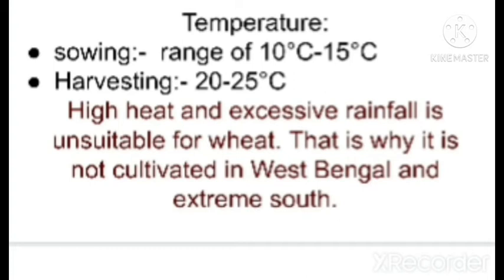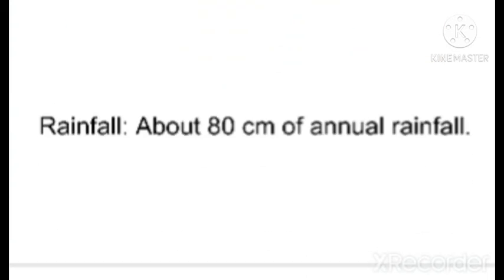That is why West Bengal and other southern peninsular states do not cultivate wheat, as those regions experience a tropical climate with high temperature and heavy rainfall. In the northern plains, wheat cultivates only in the winter season. The amount of rainfall suitable for wheat cultivation is between 50 to 100 centimeters — on average about 80 centimeters. In the northern plains, especially Punjab, Haryana, and Uttar Pradesh, western disturbances bring winter rainfall to those regions.